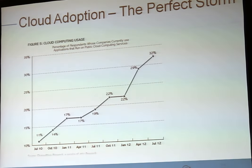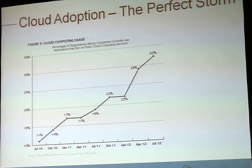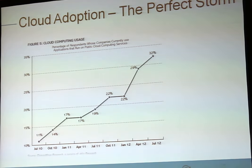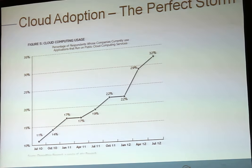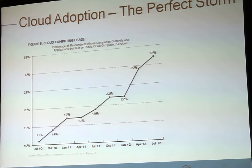We've got this perfect storm brewing: cloud, virtualisation, bring your own device — it's all converging. Think about all those days in the press — laptop computers left in the back of a taxi, unencrypted, with personal records on them. We thought, if we're carrying mobile devices and laptops, why don't we encrypt them? Now we're in the virtual world — why should it be any different? We're not encrypting it; we're just putting it up in the cloud. Which is great — I endorse it — but we're not doing the basics.